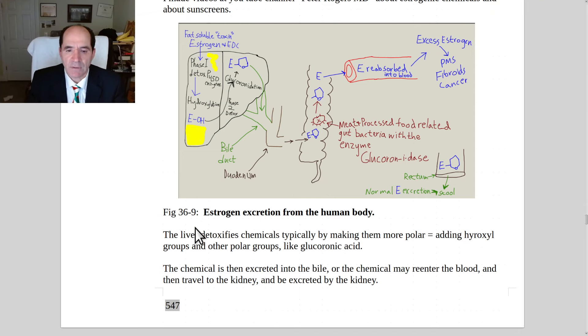Here's figure 36-9. This is estrogen excretion from the human body. So what happens is estrogens are taken up by the liver. These are excessive estrogens that the body deems should be excreted. And it then conjugates them.